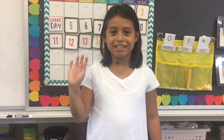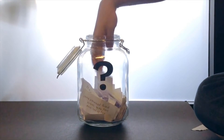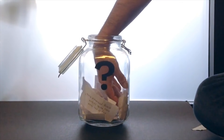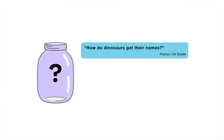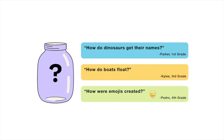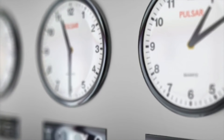That's all for this week's question. Thanks, Alessandra, for asking it. For the next episode, I reached into my question jar and found three questions I'm thinking about answering. When this video is done playing, you'll get to vote on one. You can choose from: how do dinosaurs get their names? How do boats float? Or how were emojis created? Submit your vote when the video is over — I want to hear from all of you watching. There are mysteries all around us. Stay curious, and see you next week.